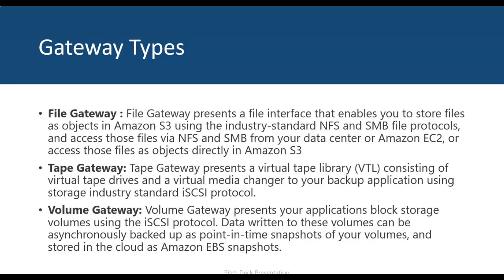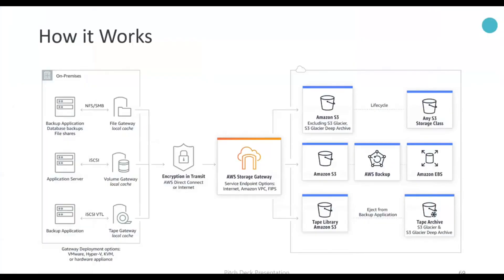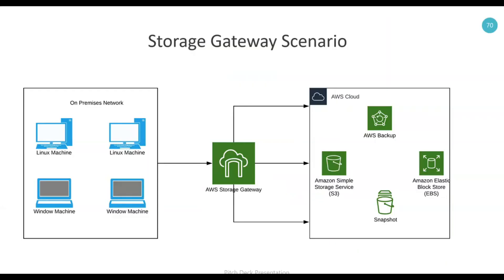Looking at how it works: on the left side is on-premise and on the right side is the S3 bucket. On the on-premise side you can use it for backup applications, database backup, and file sharing via the File Gateway. You can use the Volume Cache to migrate application server data to S3, and the Tape Gateway library for backup applications such as VM backup, Veeam backup, or any third-party backup solution to sync data to AWS S3 storage.